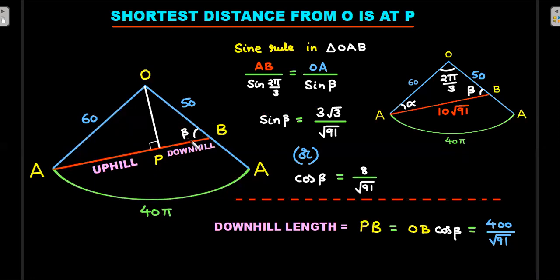To get this downhill length PB, I need angle β in this triangle. For β, I'll take the bigger triangle and use sine rule in triangle AOB where journey distance is 10√91. AB divided by sin 120 equals OA which is 60 divided by sin β. Sin β comes out to this number. Then I'll get cos β. Once you get cos β, the value of PB is OB·cos β, which comes out to 400/√91. So the downhill length is 400/√91, not 209√9/√91.